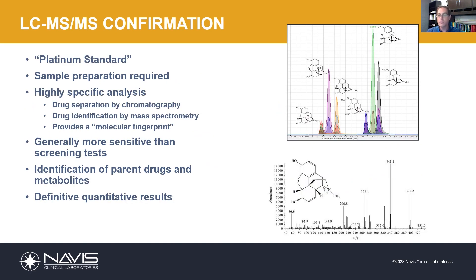Turning to the confirmatory testing, we use liquid chromatography mass spectrometry — LCMS — for our confirmatory tests. GCMS, gas chromatography, is also another valid technique analogous to what we're discussing here today. These techniques are referred to as the platinum standard. These are as definitive as we get, and these results are defensible.